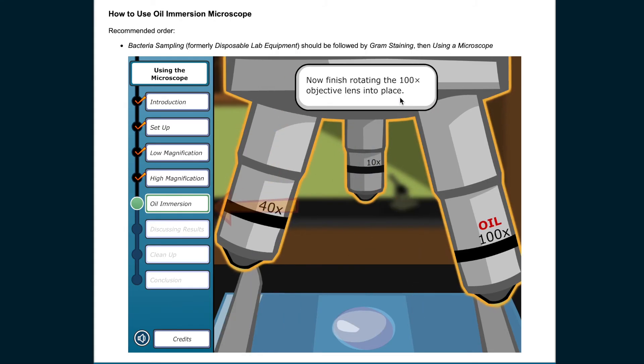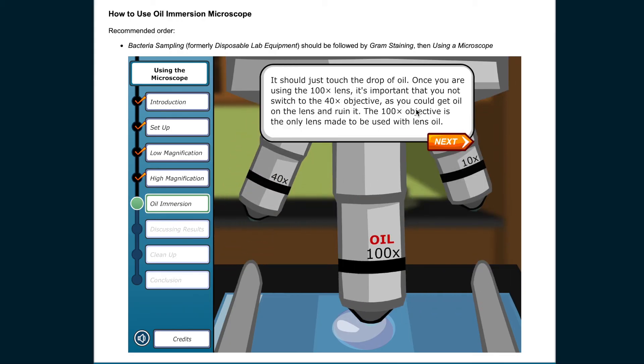Now, finish rotating the 100 times objective lens into place. It should just touch the drop of oil. Once you're using the 100 times lens, it's important that you not switch to the 40 times objective, as you could get oil on the lens and ruin it. The 100 times objective is the only lens made to be used with lens oil.